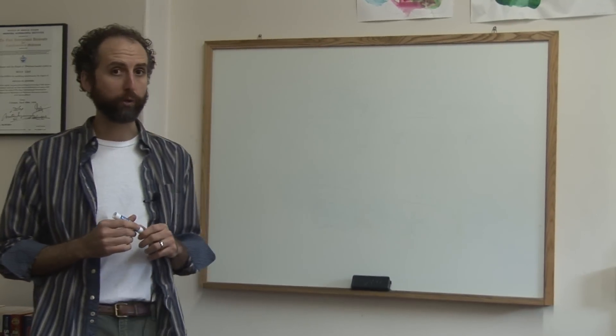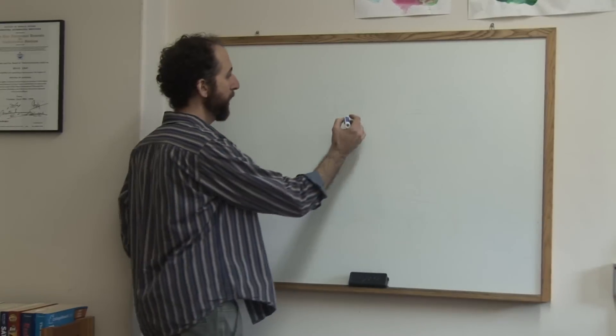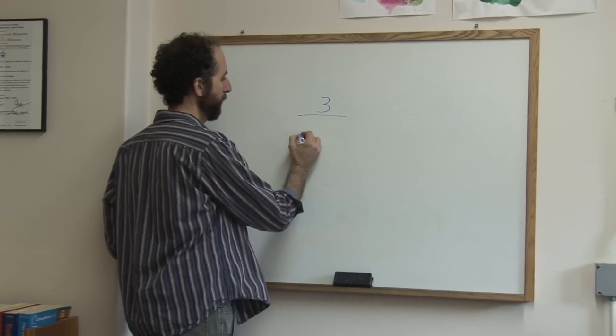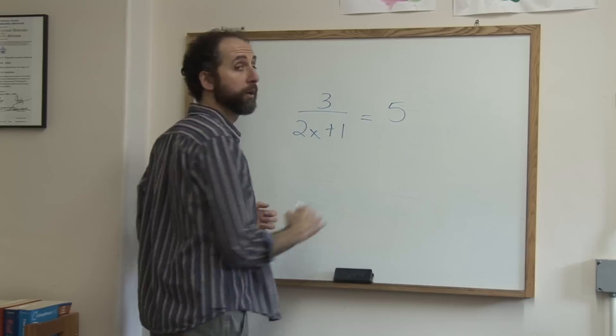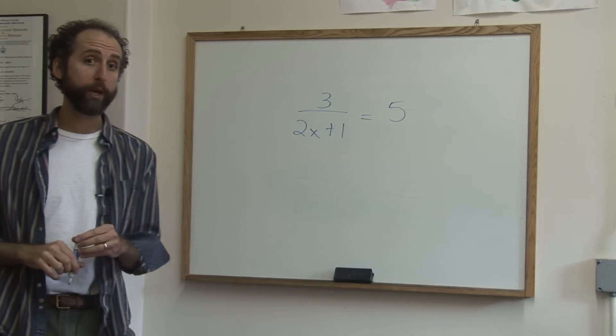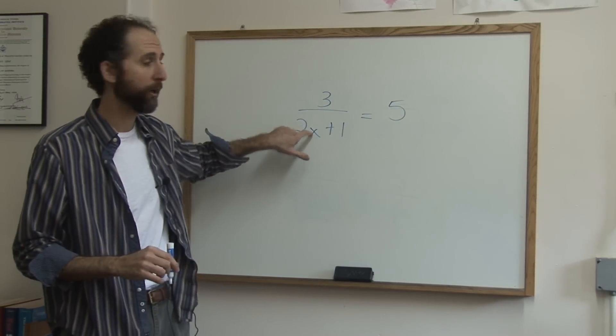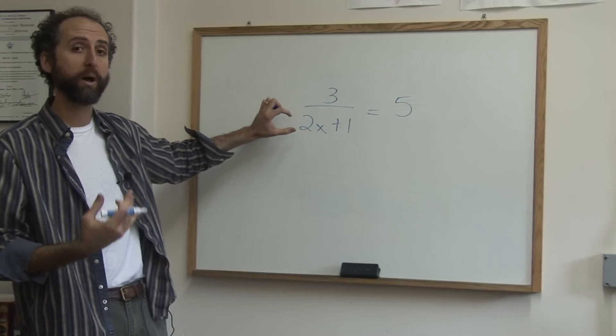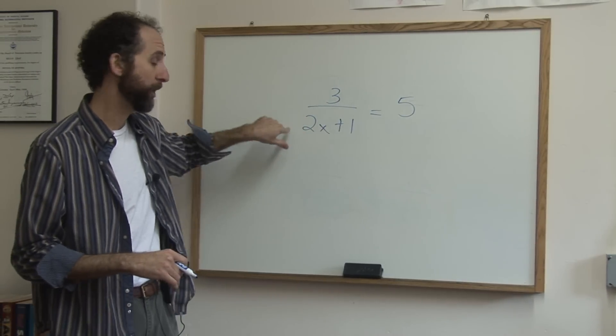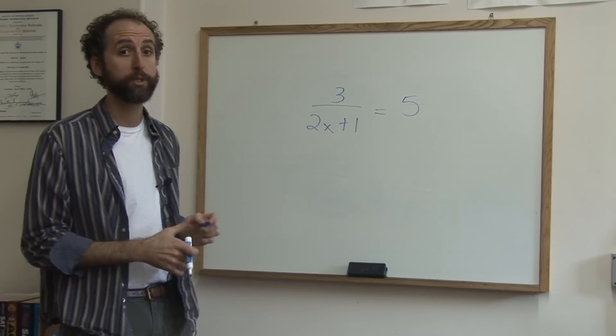Let's talk about how to solve a rational equation. If we had 3 over 2x plus 1 equals 5. This is called a rational equation because we have a variable in the denominator, the fancy word for bottom of a fraction. So in this denominator we have a variable, which makes it a rational equation.